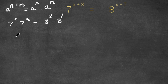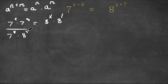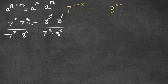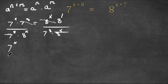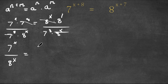Now, I'm going to divide both sides by 7 to the power of 8 as well as 8 to the power of x. So these two would cancel out, and on this side these two would cancel out. So now we are left with 7 to the power of x over 8 to the power of x is equal to 8 to the power of 7 over 7 to the power of 8.